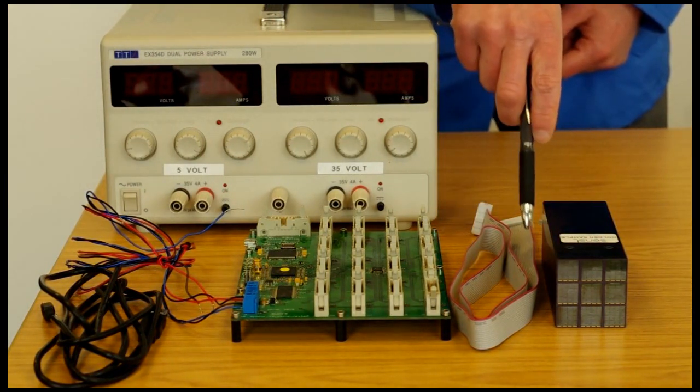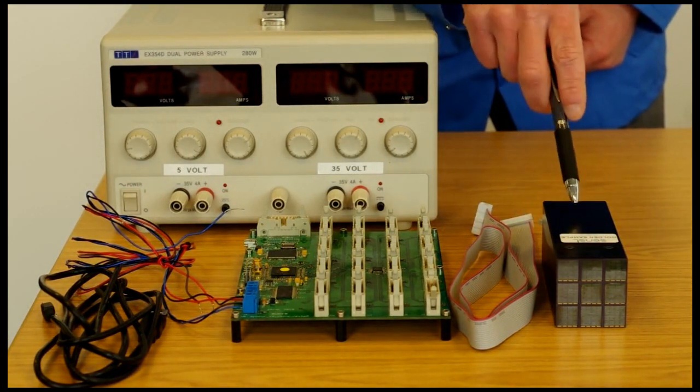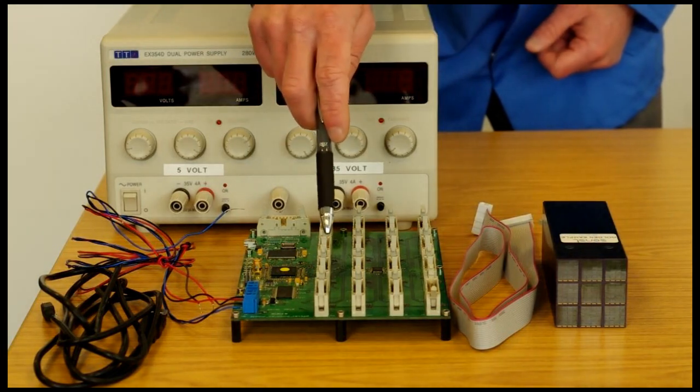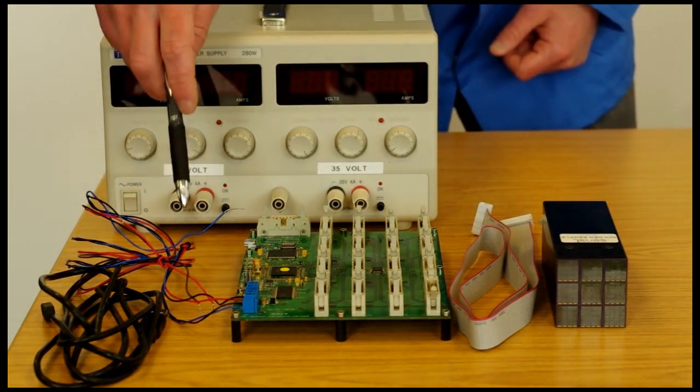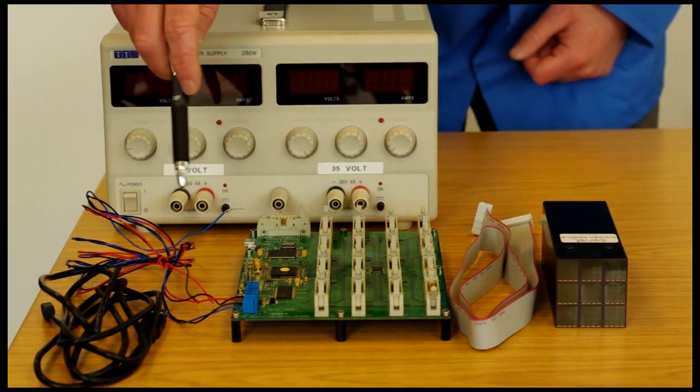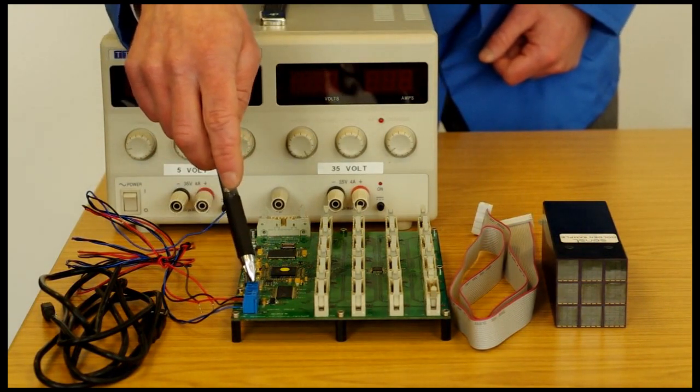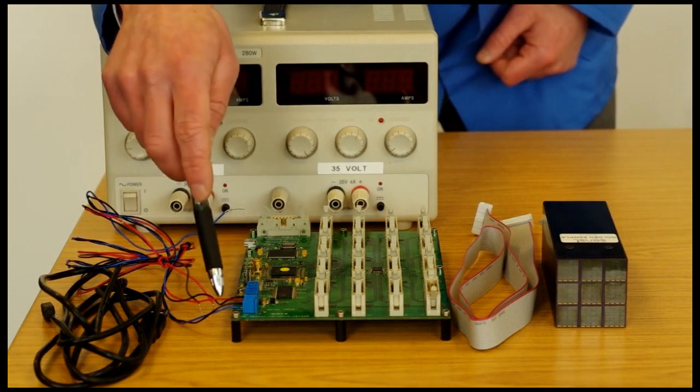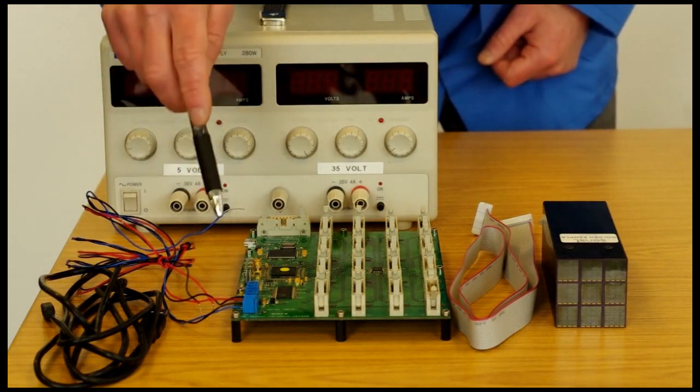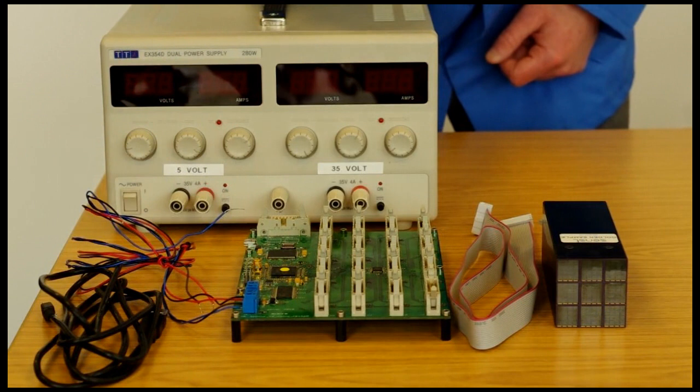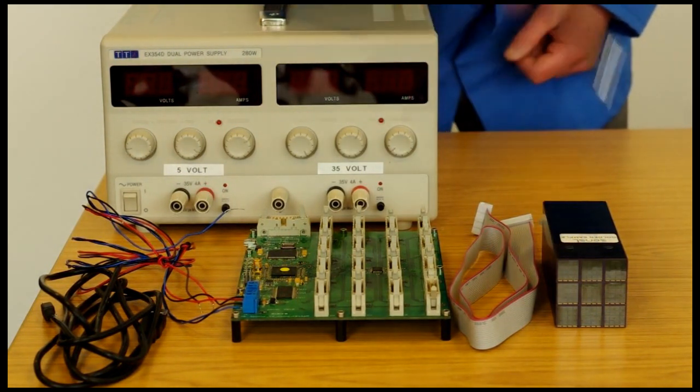The IDC cable connects our Matrix SL9 to our Matrix EVB. And the power connections are shown here where the plus 5 volts that goes to the Matrix EVB is the red cable and the blue cable connects plus 35 volts and supplies the power to the detectors.